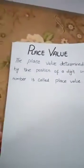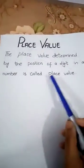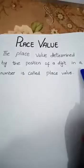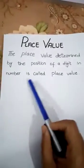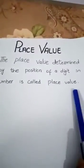In the following numbers, name the place value of the digit. Now, define place value: the value determined by the position of a digit in a number is called place value.